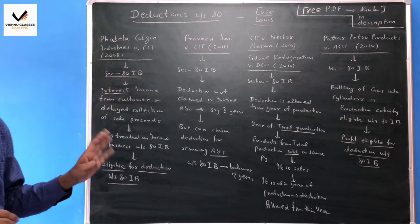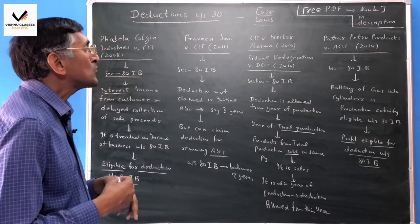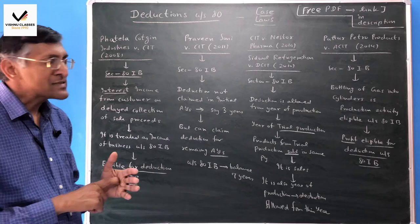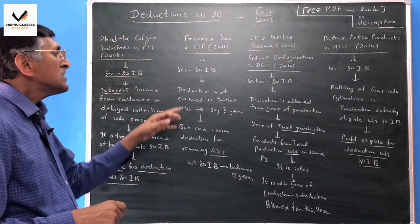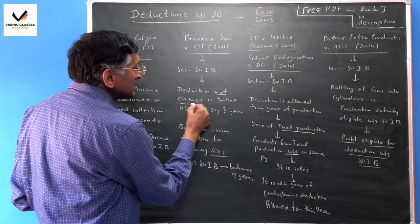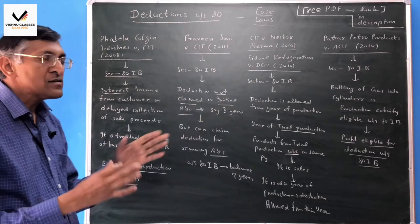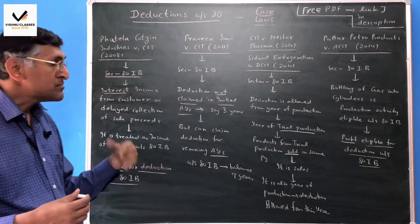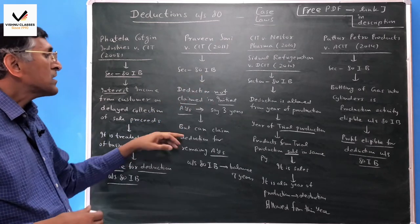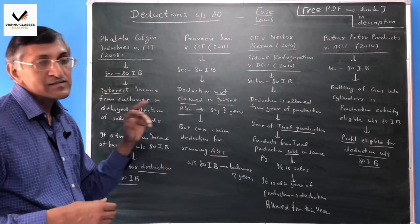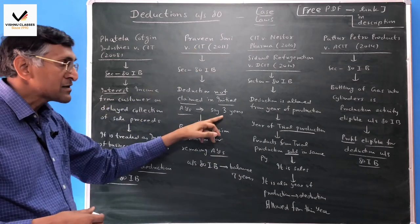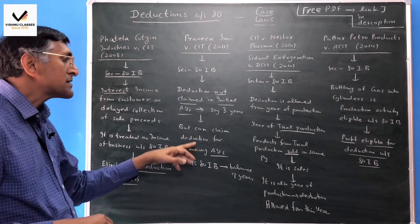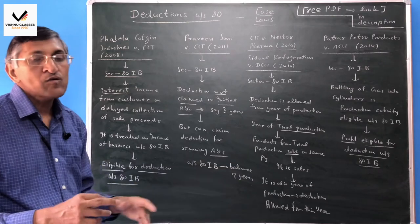Preemacy in section 80IB. For a number of years, deduction has been allowed. But can we claim deduction for remaining assessment years? This case law decided that for three years, two years, or one year - the remaining assessment years - we can claim deduction for the remaining assessment year.